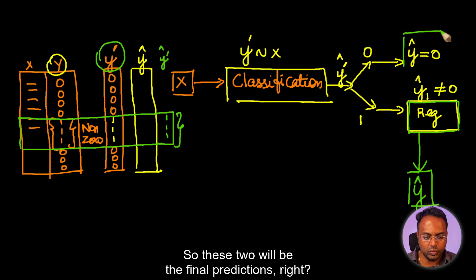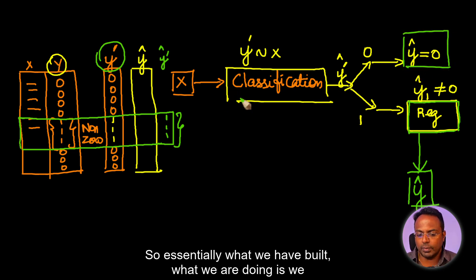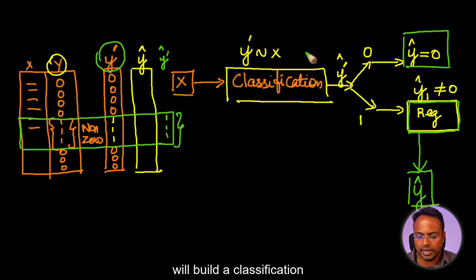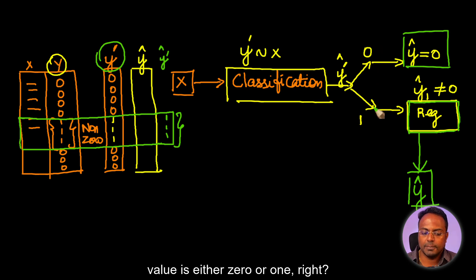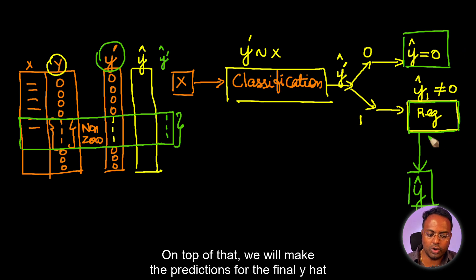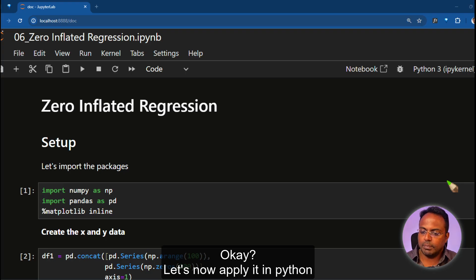So essentially what we are doing is, we will build a classification. We take the data, we build a classification to see if the predicted value is either zero or one. If it is zero, then Y hat equals zero. If it is one, we build a regression model. On top of that, we will make the predictions for the final Y hat. Okay, let's now apply it in Python.